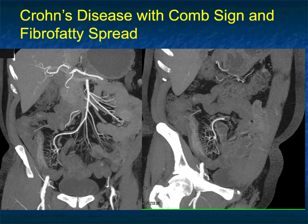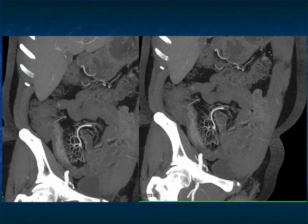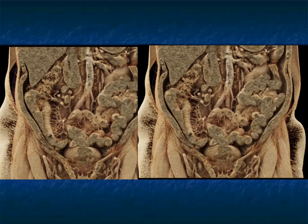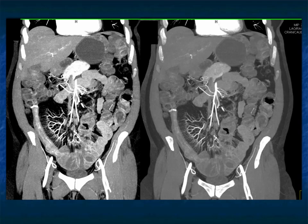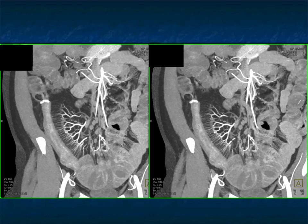Here's another example with fibro-fatty proliferation and the prominent vasa recta — the so-called comb sign. The vessels are all patent, but look at that branching of the distal ileal vessels, very nicely shown. And here it is with cinematic rendering, which really accentuates those vessels and the mapping of the vessels. Here's another example with a comb sign in Crohn's disease: terminal ileum wall thickening, hyperemia, prominent vasa recta, fibro-fatty proliferation — all of the various findings that allow you to be very specific for Crohn's disease.